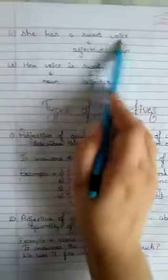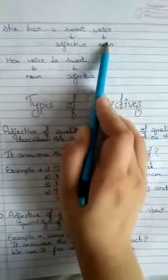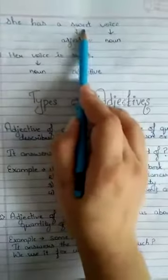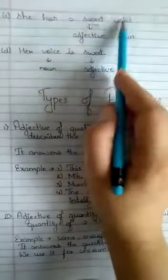Next is 'She has a sweet voice.' Voice is what? A noun. And sweet is what? An adjective. It is placed before the noun.